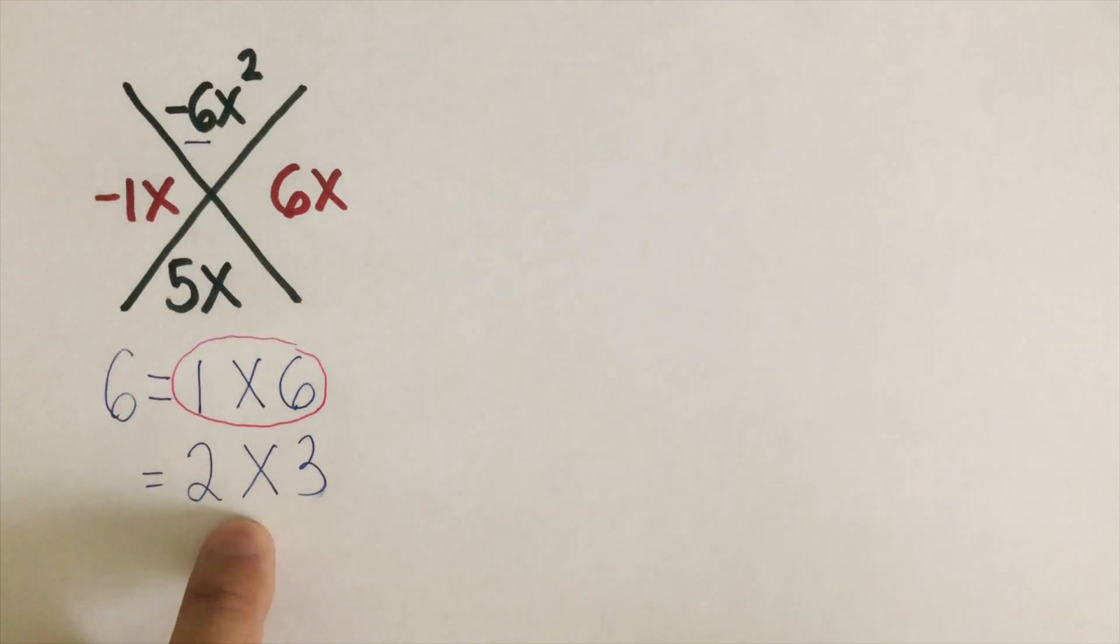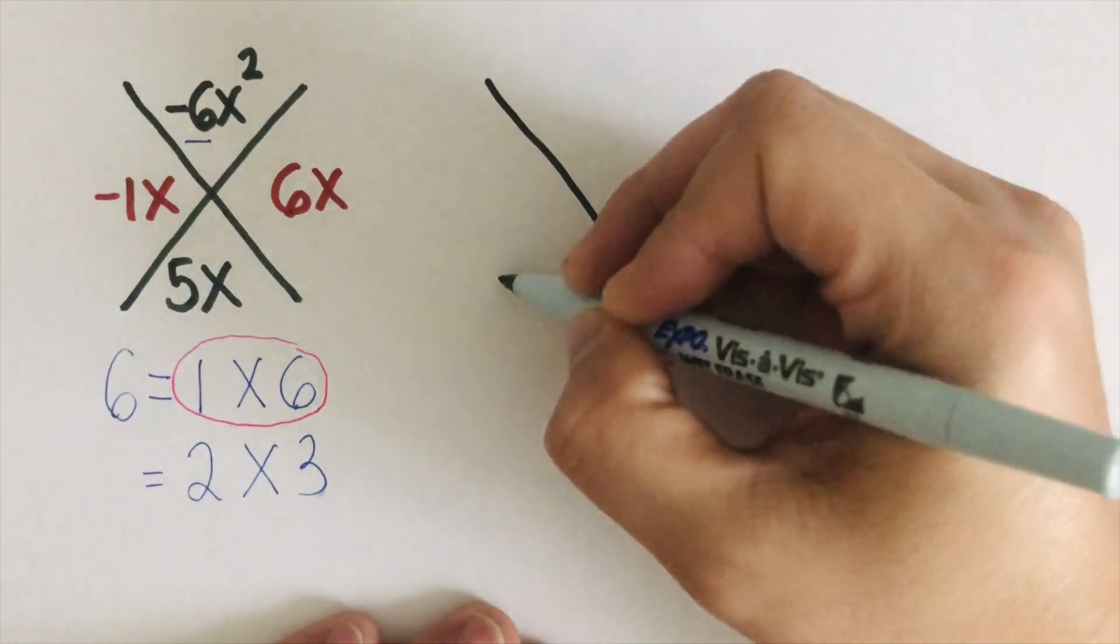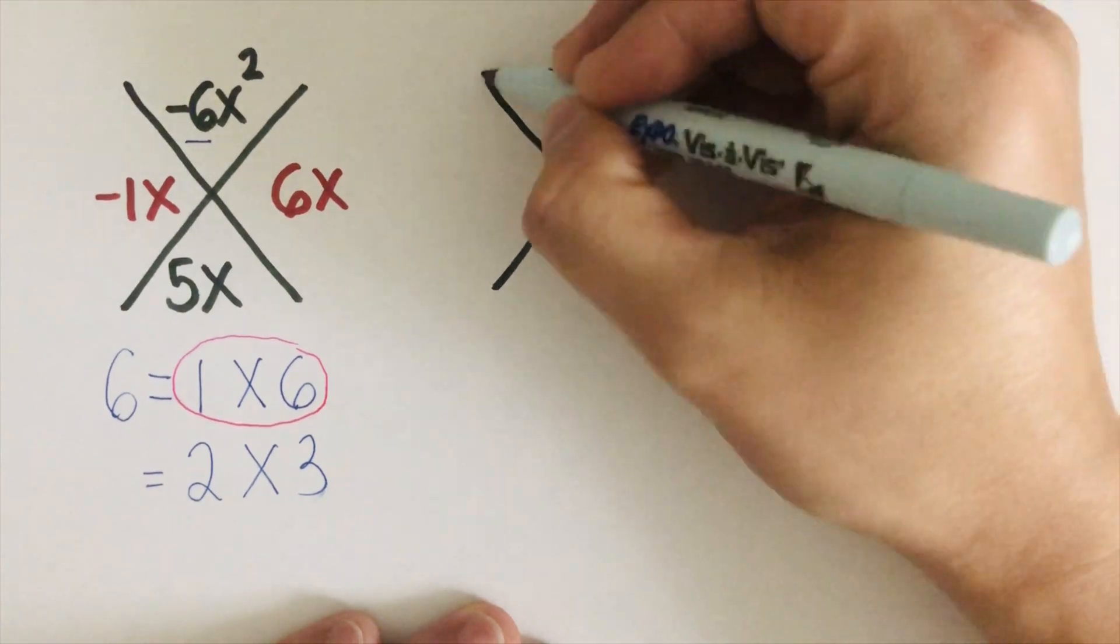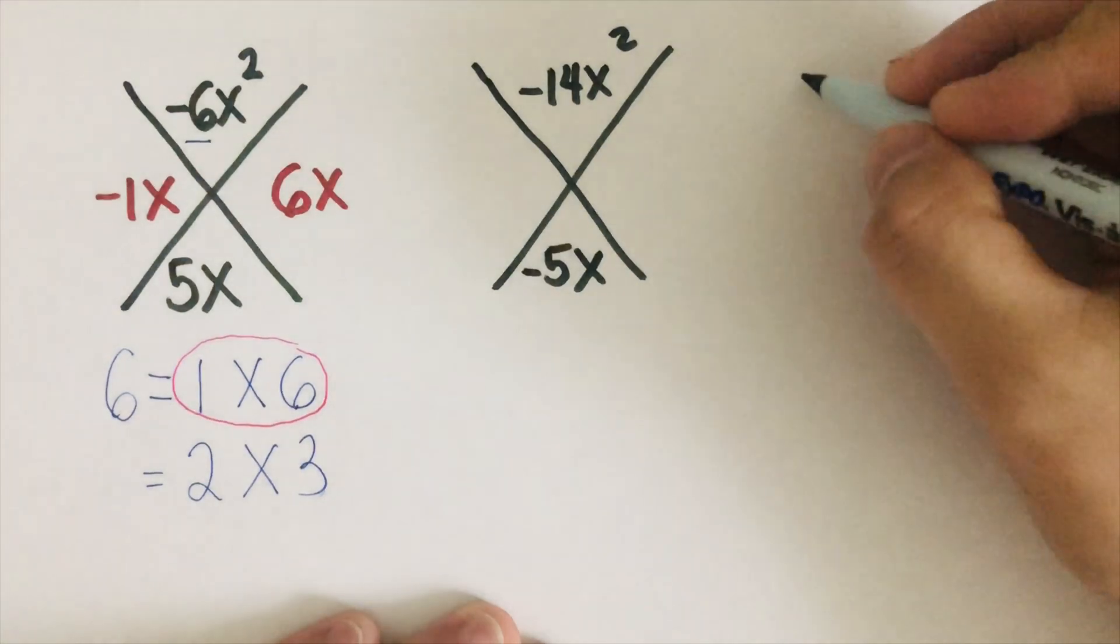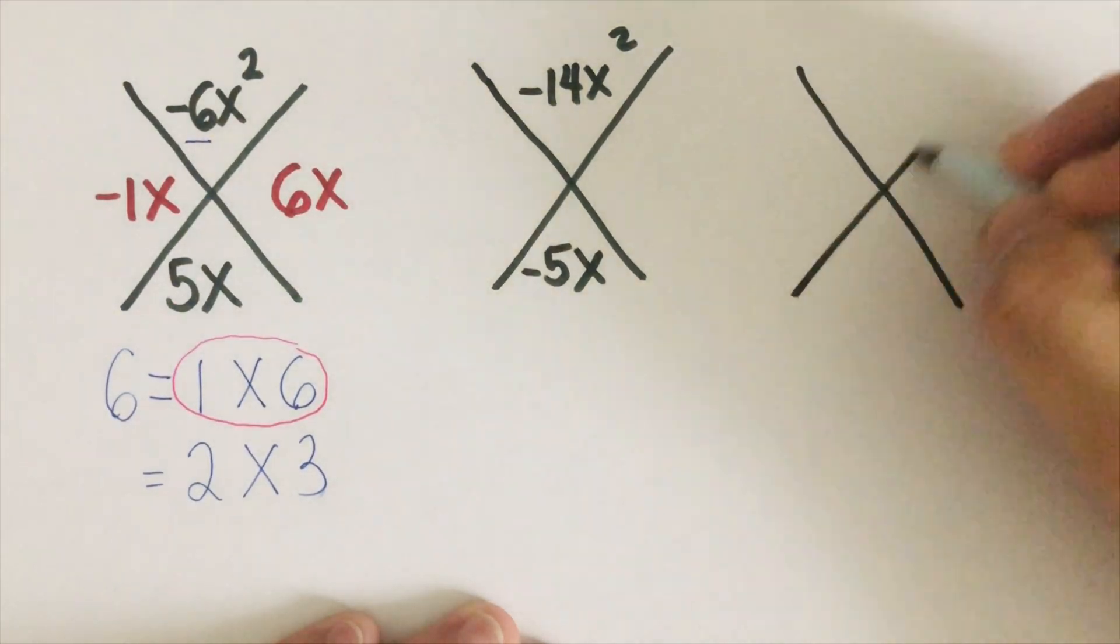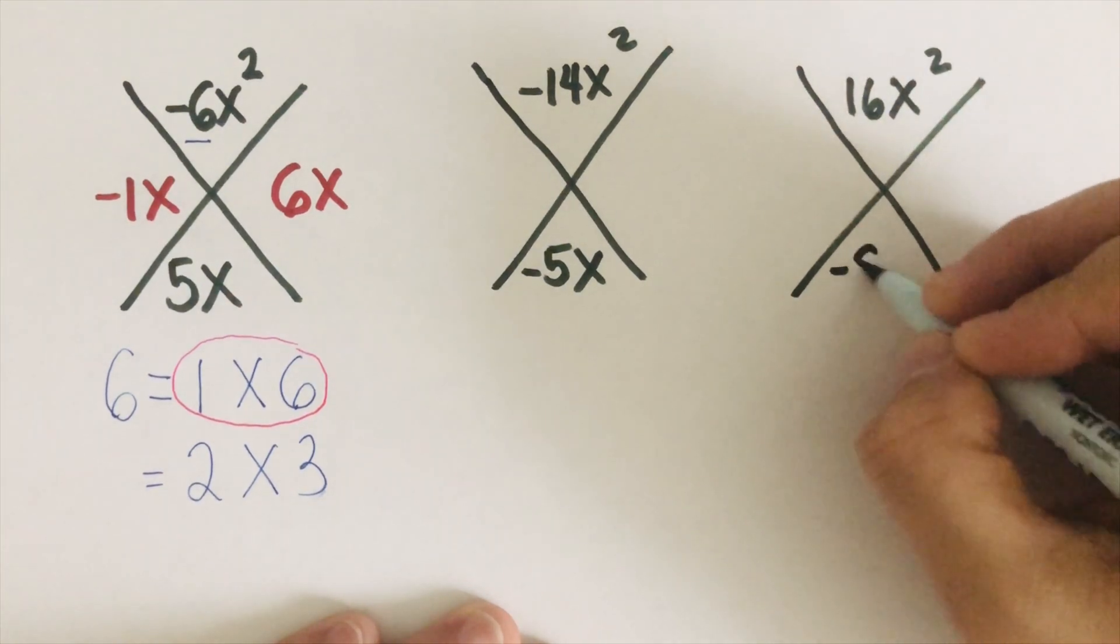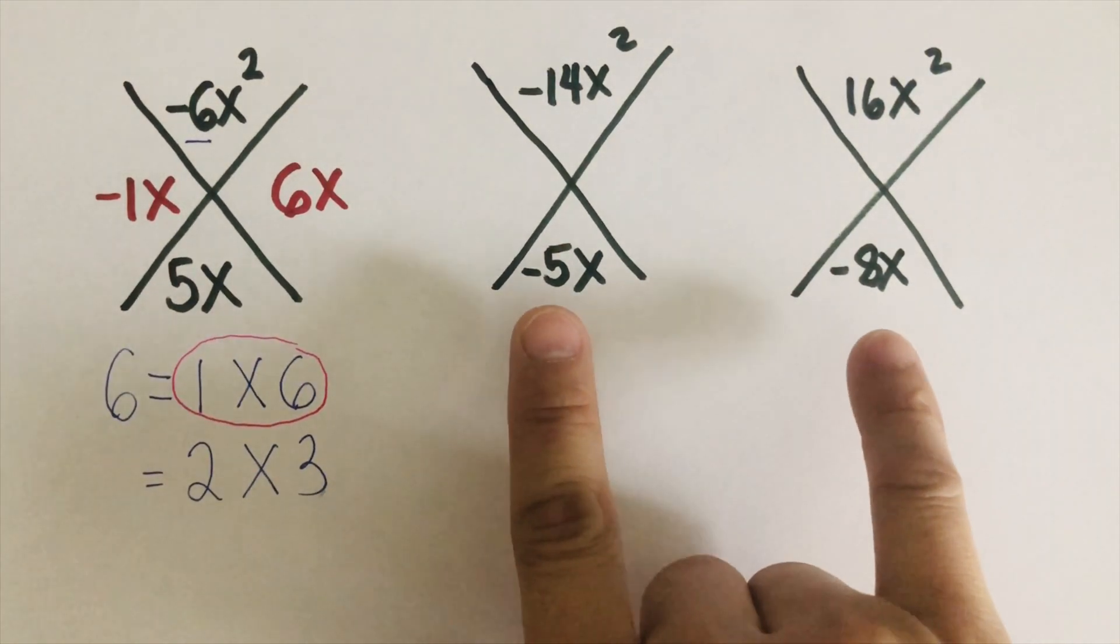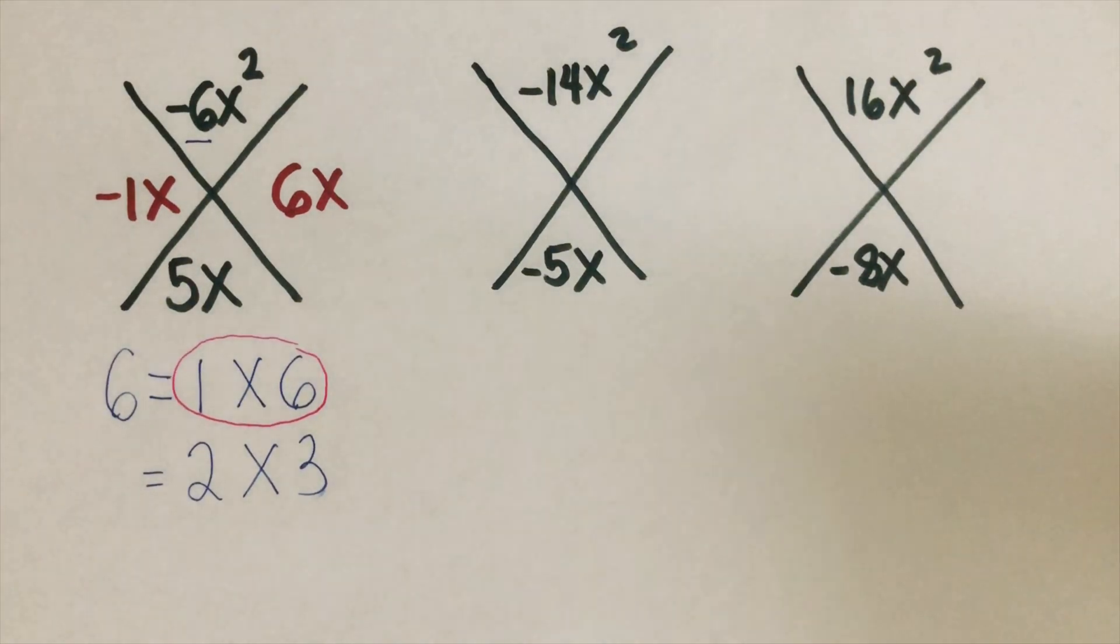Okay, so let's have the next example right here. Let's have here negative 14x squared and this is negative 5x. And over here, let's have 16x squared and this is negative 8x. At this time, I will encourage you to pause this video and try these two problems on your own. And when you're done, unpause it and check your answer.